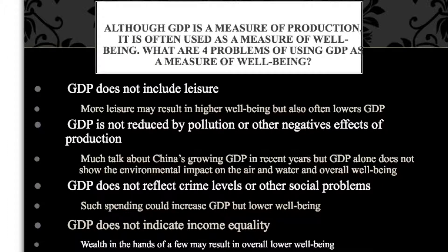A lot of these issues have to do with comparing one country's GDP to another and trying to draw conclusions from it. There are four of them: GDP does not include leisure; it is not reduced by negative effects of production; GDP does not reflect any sort of social problems; and it would not give you any indication of income equality or income inequality.